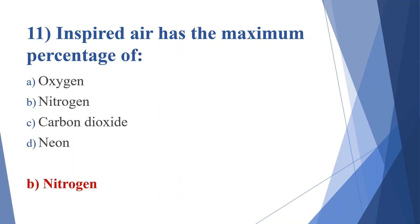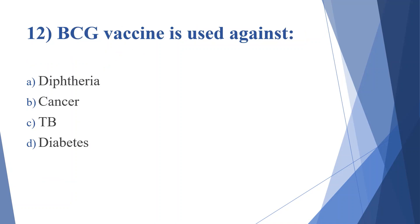Twelfth question: BCG vaccine is used against. Option A: diphtheria. Option B: cancer. Option C: TB. Option D: diabetes. Answer is option C, TB.